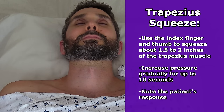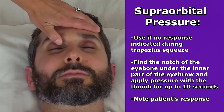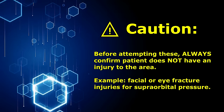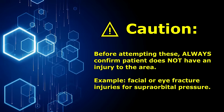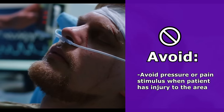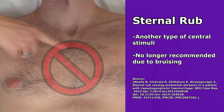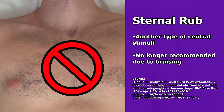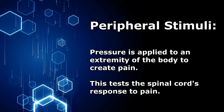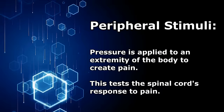If no response is noted, you could move to supraorbital pressure, found around the eyes. Go to the inner part of the eyebrow, feel with your thumb for a notch, and gradually apply pressure for up to 10 seconds. Before using these pressure techniques, make sure your patient doesn't have an injury in that area — for instance, facial fractures around the eyes would be a contraindication for supraorbital pressure. Another central stimuli is the sternal rub, but it's not recommended anymore because it can cause bruising. Peripheral stimuli is where pressure is applied to a peripheral extremity like the fingernail bed, which tests the spinal cord's response to pain.